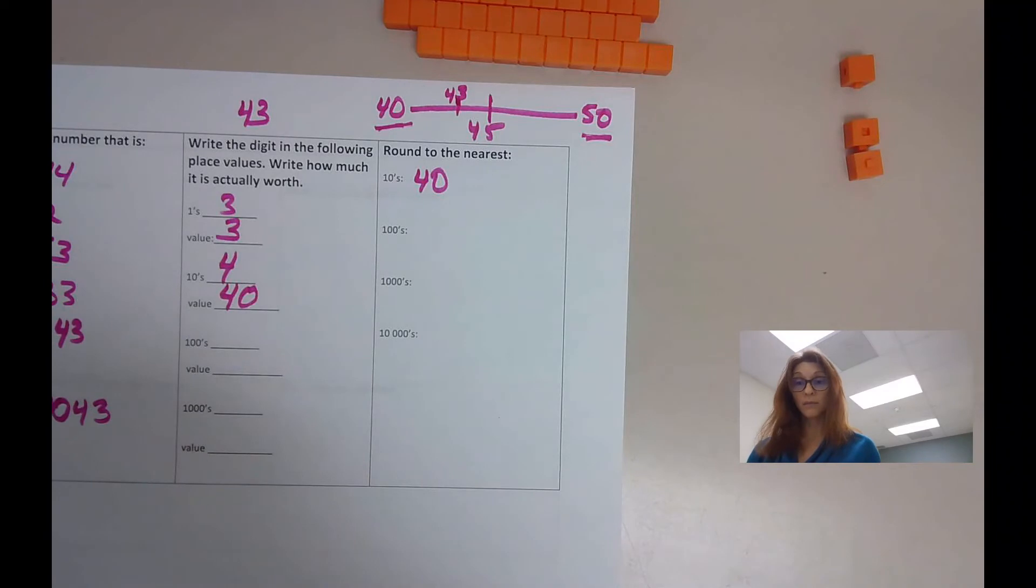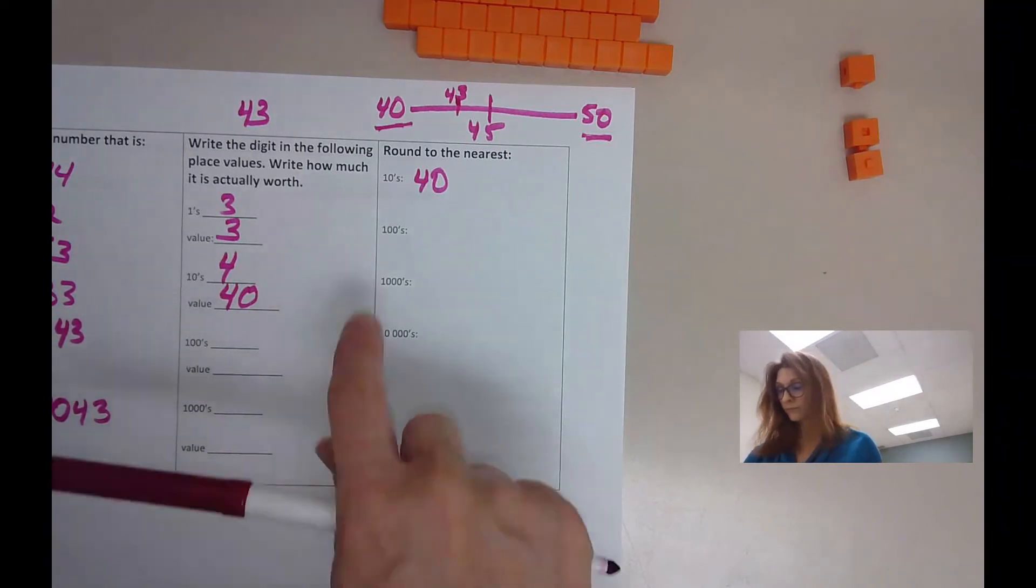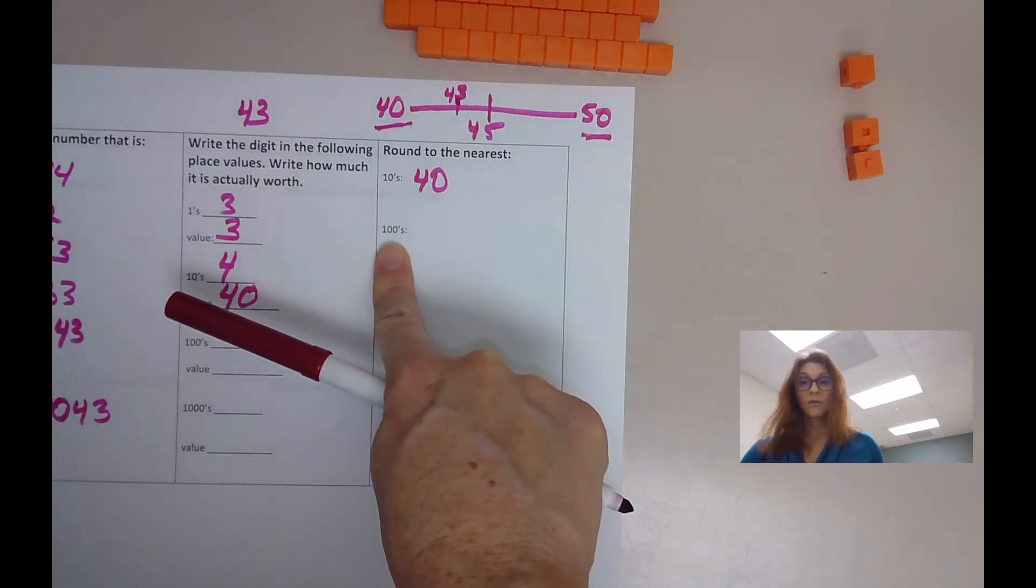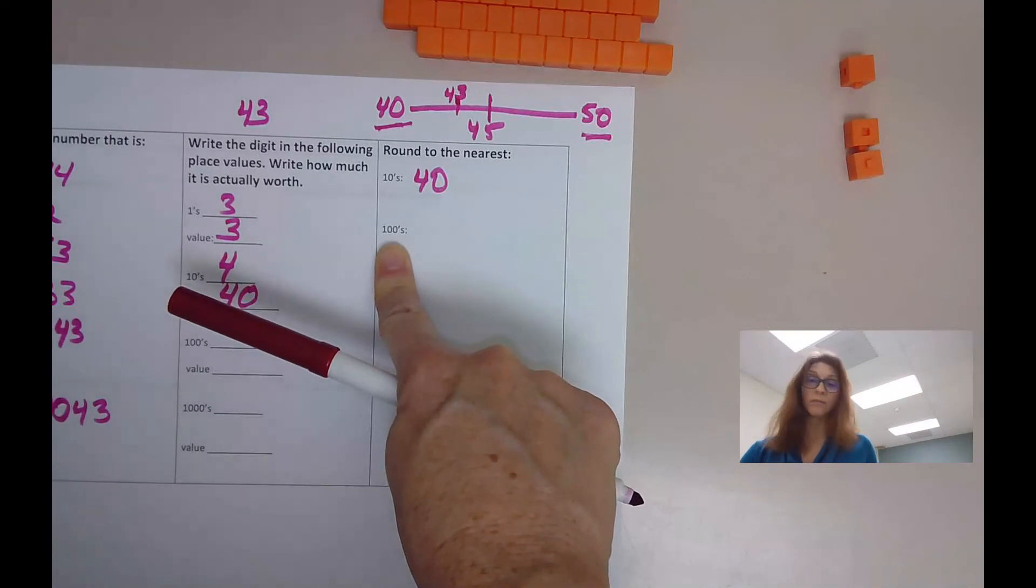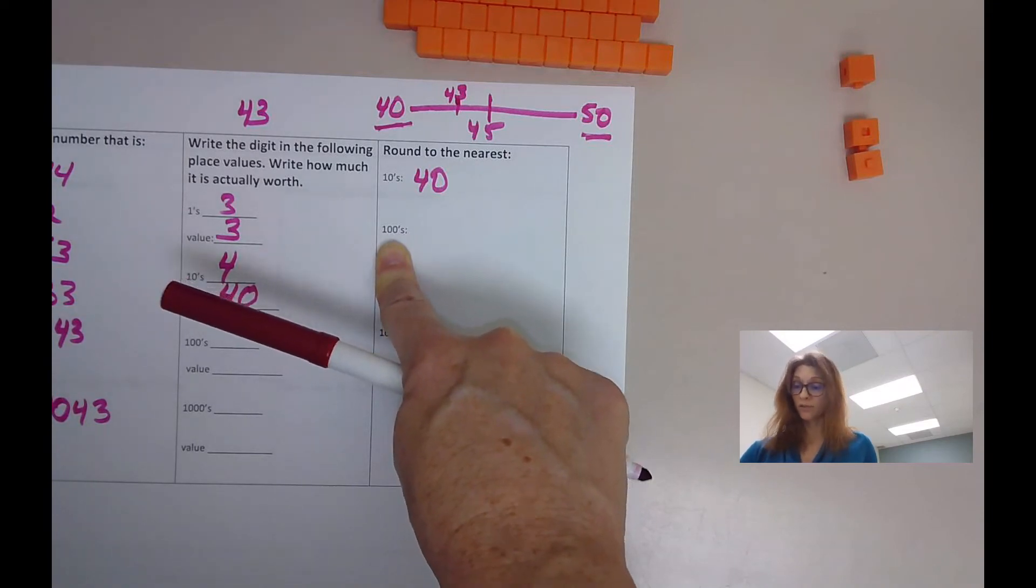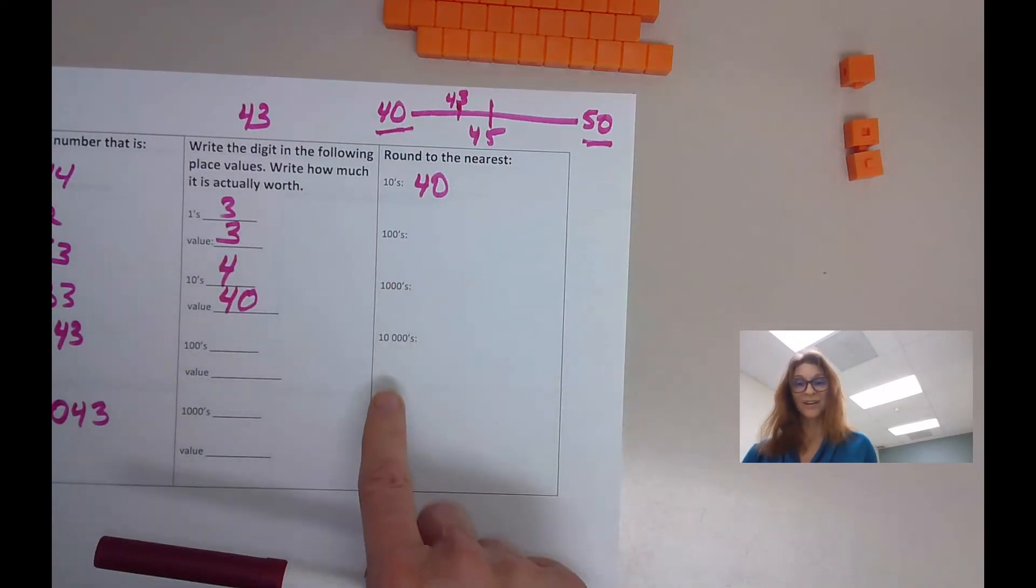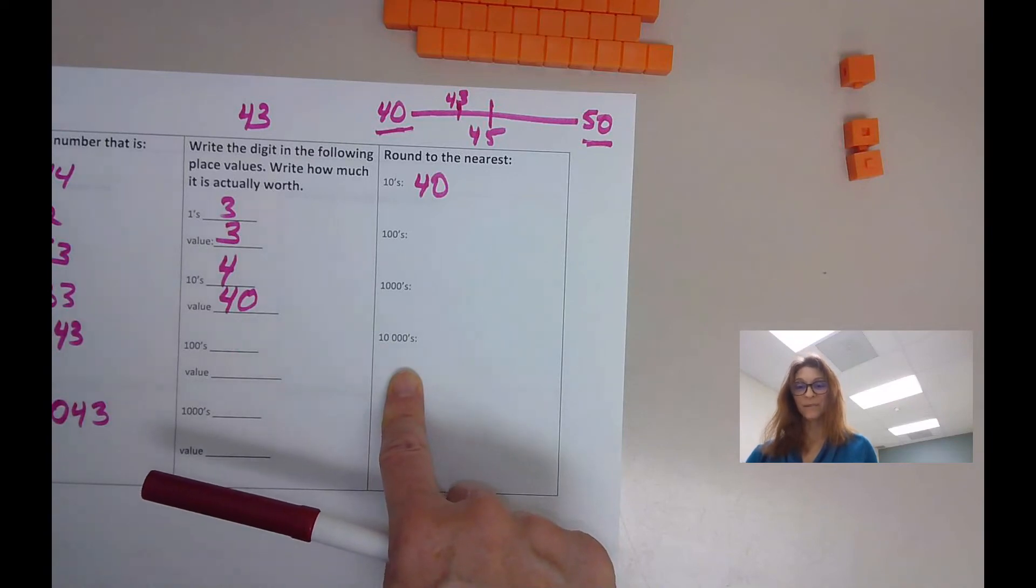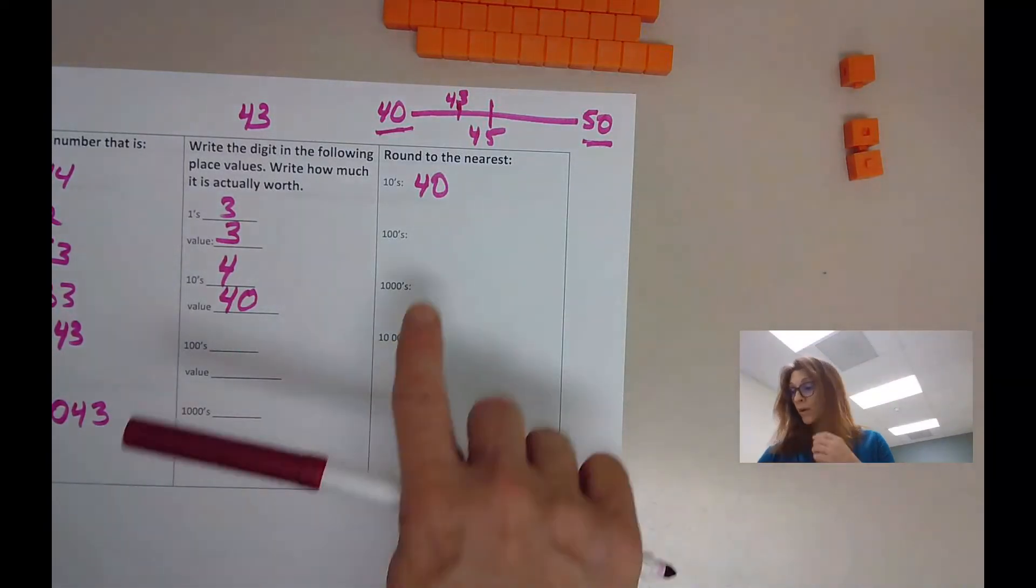Round to the nearest hundreds. We have no numbers in the hundreds. So we don't have to do this one unless you have a number in the hundreds, or the thousands, or the ten thousands.